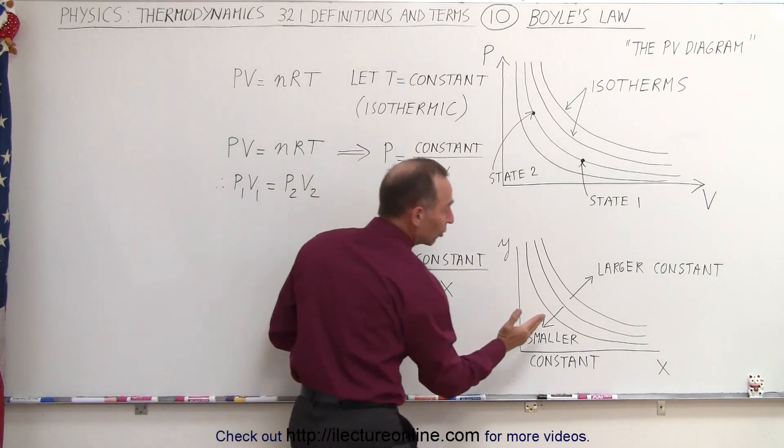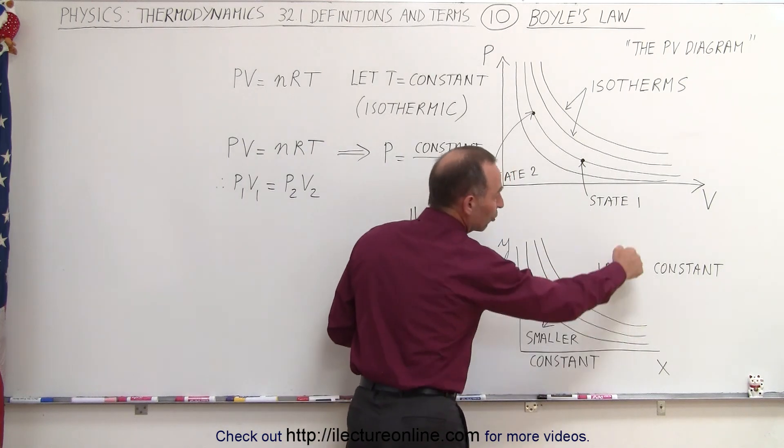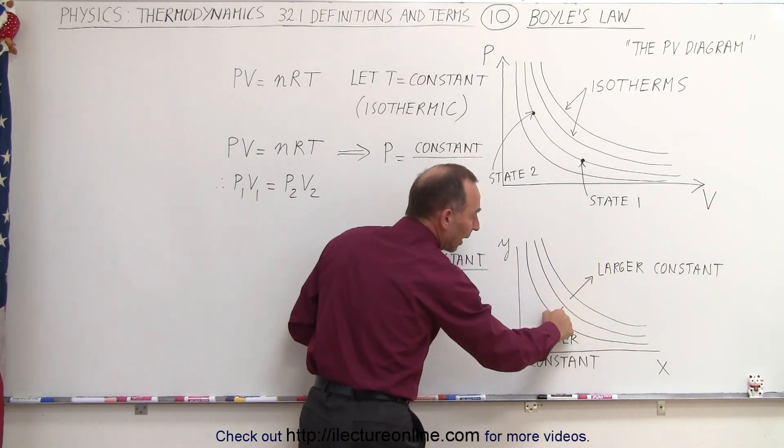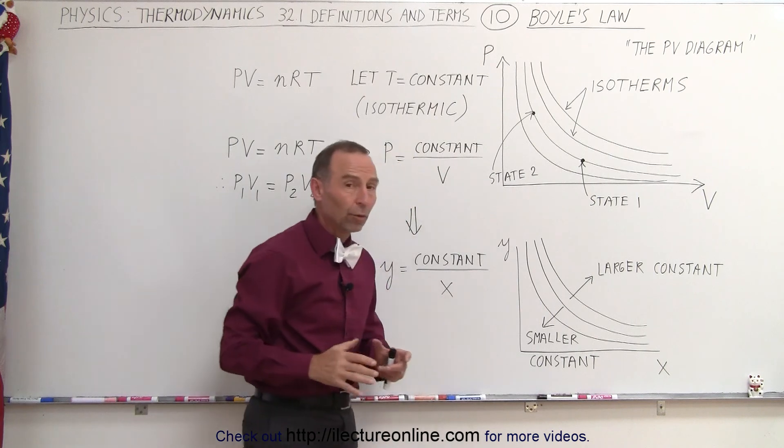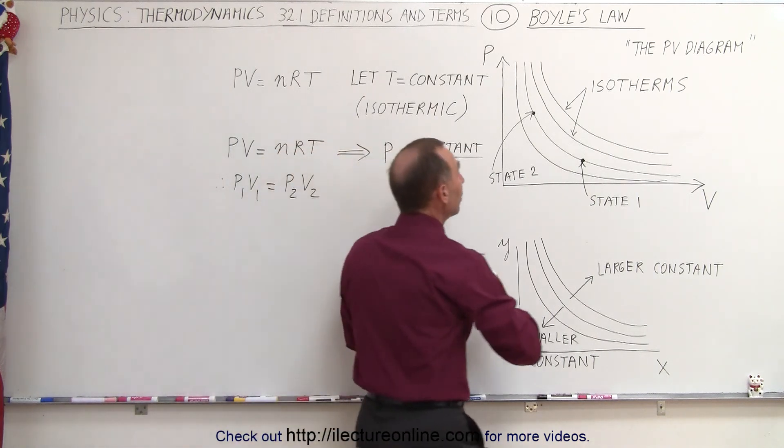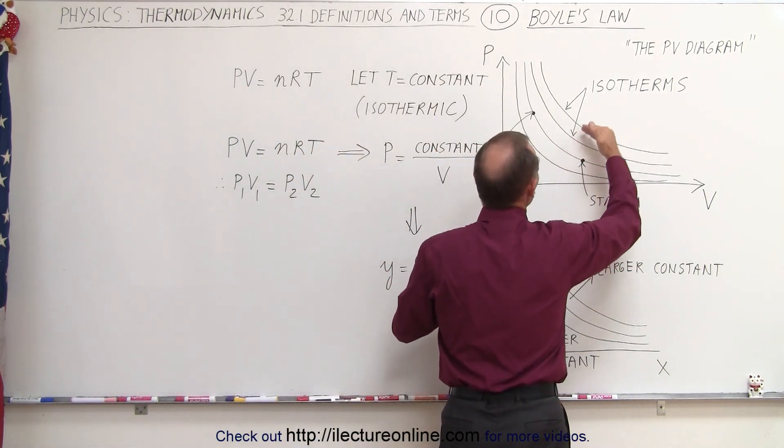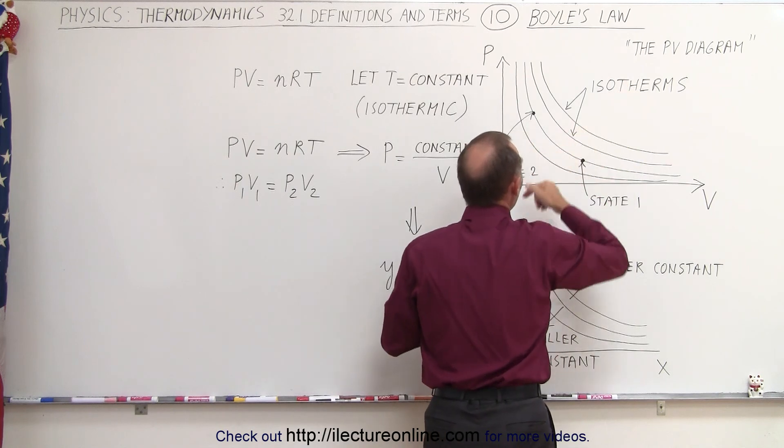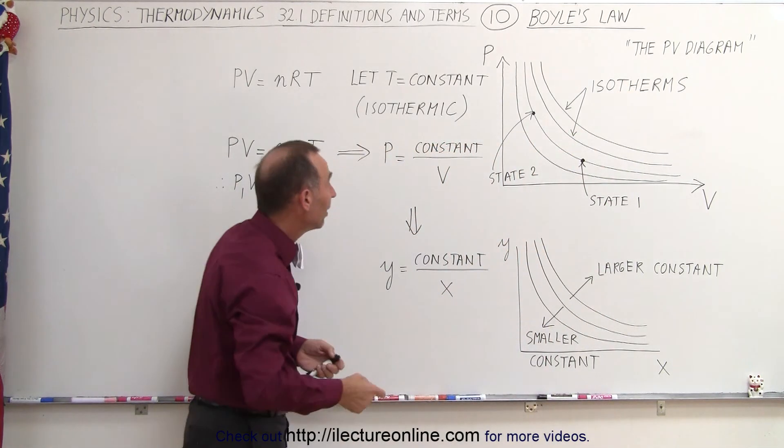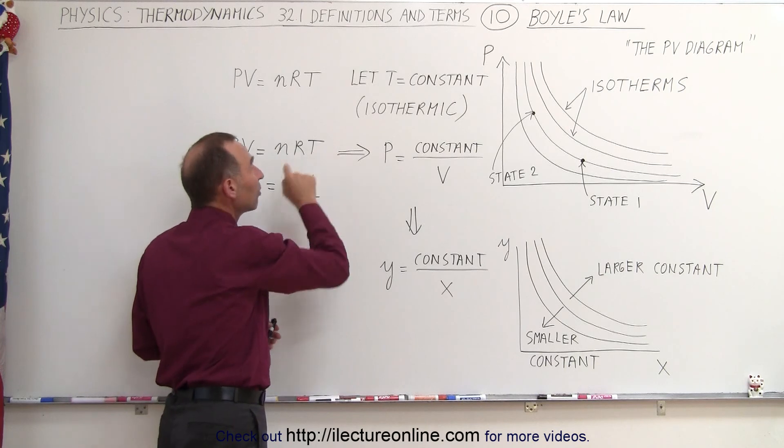If we have a larger constant, the line will be higher up like this. With a smaller constant, the line will be down in this direction. So for the same reason, we realize now that the constant becomes larger up here and smaller down here, and what determines the size of the constant is the value for T, the temperature.